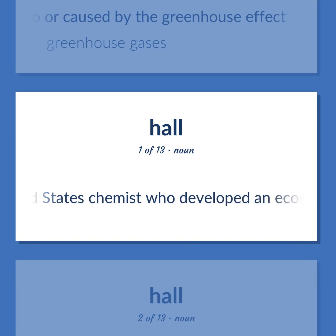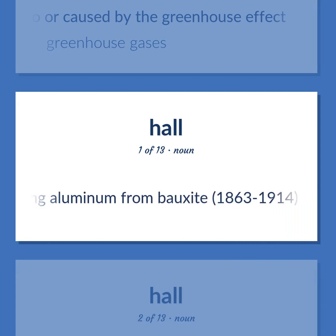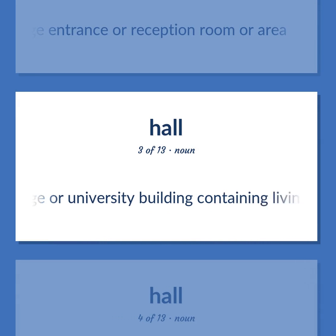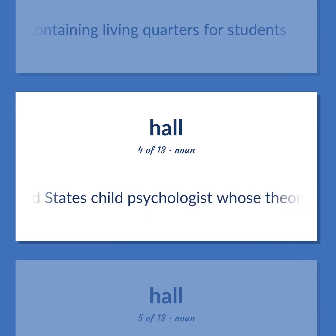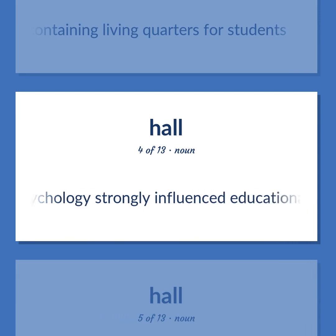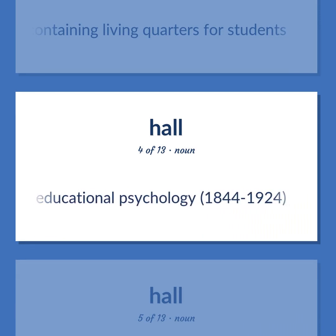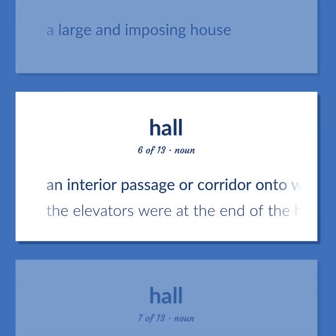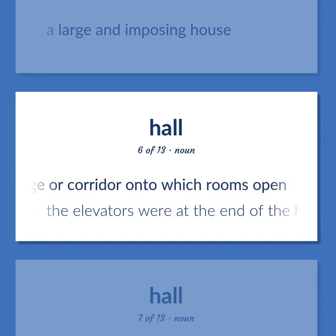Hall: Charles Martin Hall — the United States chemist who developed an economical method of producing aluminum from bauxite (1863–1914). A large entrance or reception room or area. A college or university building containing living quarters for students. G. Stanley Hall — United States child psychologist whose theories of child psychology strongly influenced educational psychology (1844–1924). A large and imposing house. An interior passage or corridor onto which rooms open — the elevators were at the end of the hall.